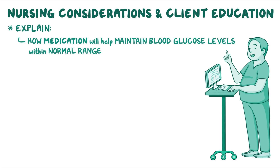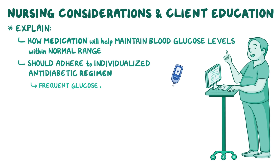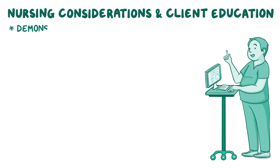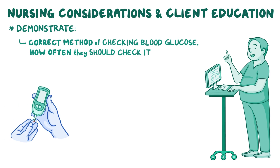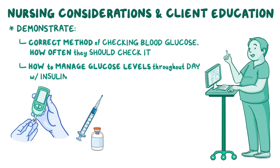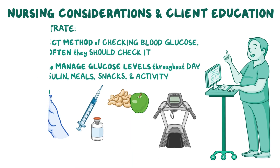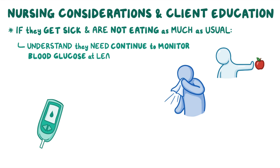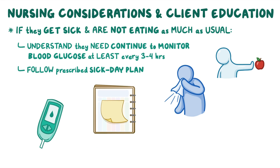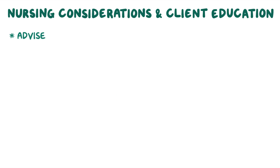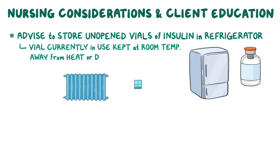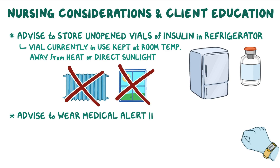Explain to your client how their medication will help maintain blood glucose within a normal range. Explain how they should adhere to an individualized anti-diabetic regimen including frequent glucose monitoring, regular activity, and a low-carbohydrate, high-fiber diet. Demonstrate how to check blood glucose levels, how often to check, and how to manage glucose throughout the day. If sick and eating less, they should monitor blood glucose at least every 3 to 4 hours and follow their prescribed sick day plan. Advise storing unopened insulin vials in the refrigerator, while the vial in use can be kept at room temperature away from heat or direct sunlight. Lastly, advise them to wear medical alert identification at all times.